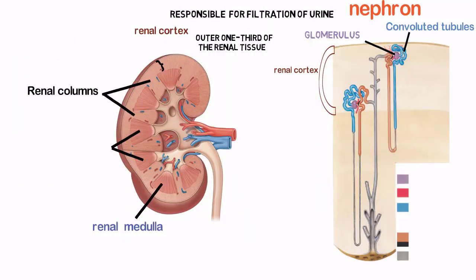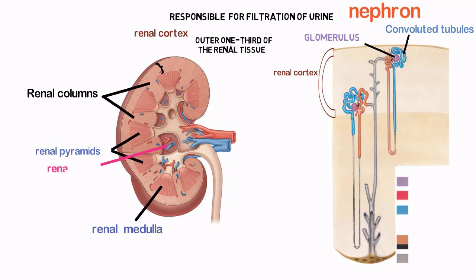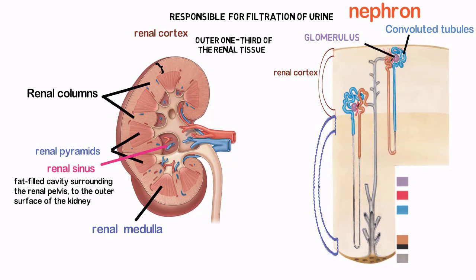The renal medulla consists of segments called renal pyramids that radiate from the renal sinus. The striated-appearing pyramids contain the loops of Henle and collecting tubules, and function as the beginning of the collecting system.